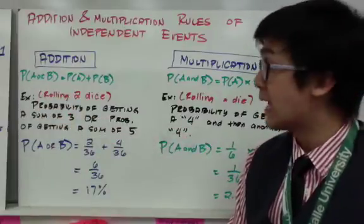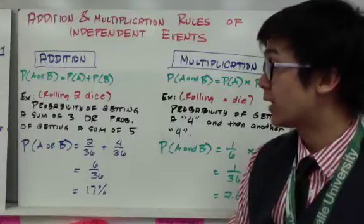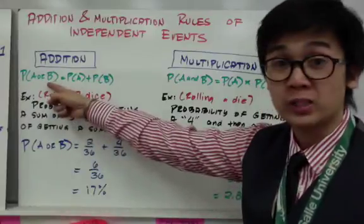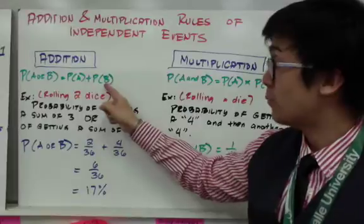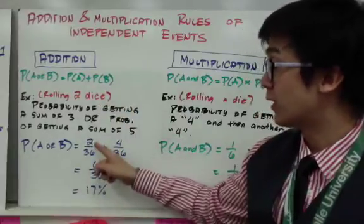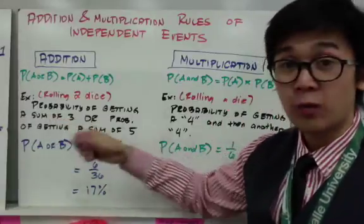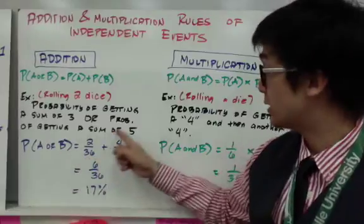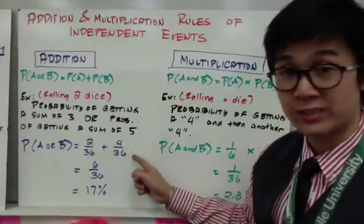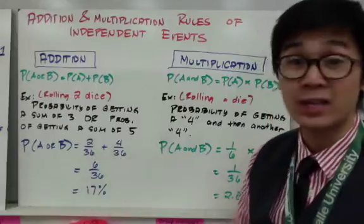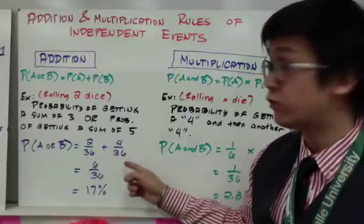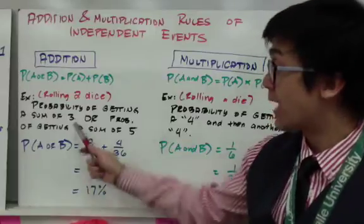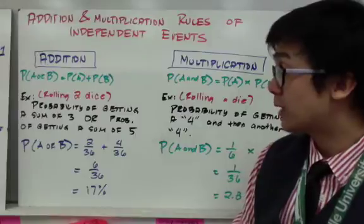In the first example, we are rolling two dice and finding the probability of getting a sum of three or a sum of five. This uses the addition rule. The probability of a sum of three is two out of 36, and the probability of a sum of five is four out of 36. Since this is an independent event, the sample space stays the same, and adding these fractions gives approximately 17%.